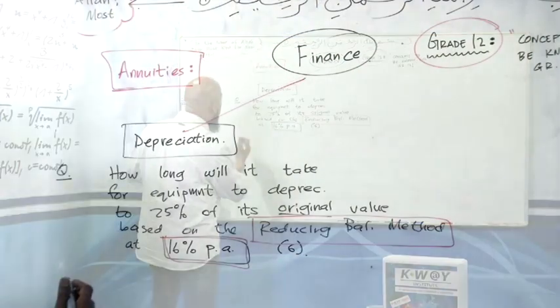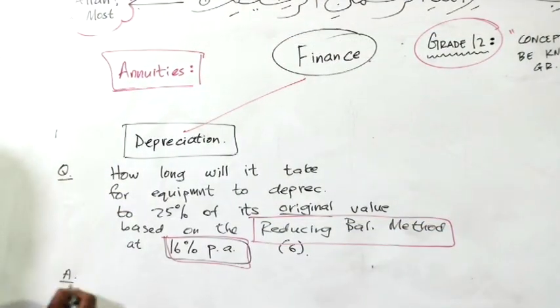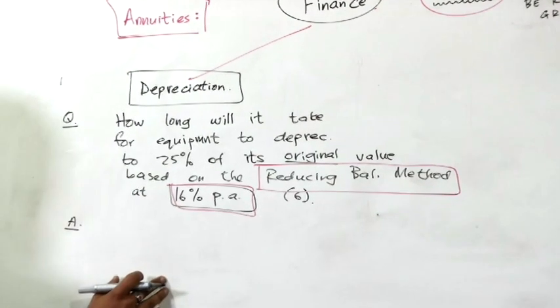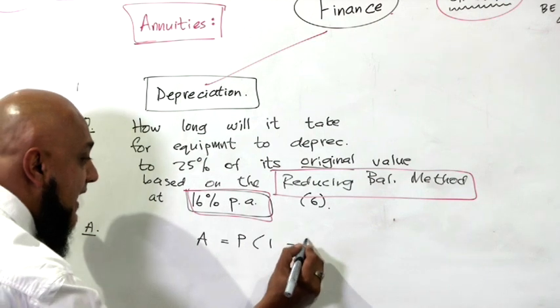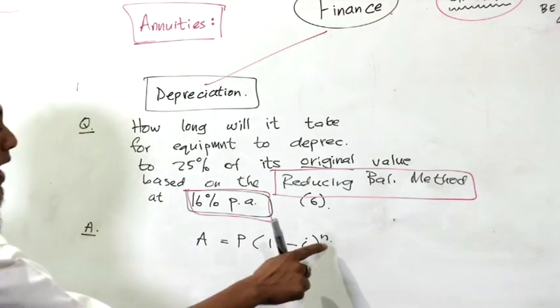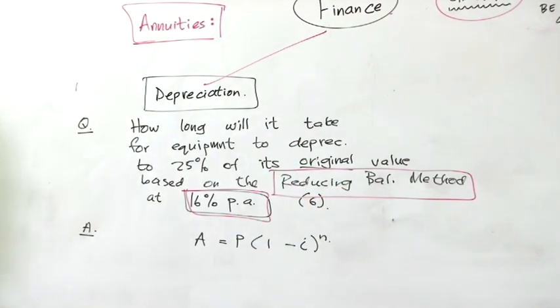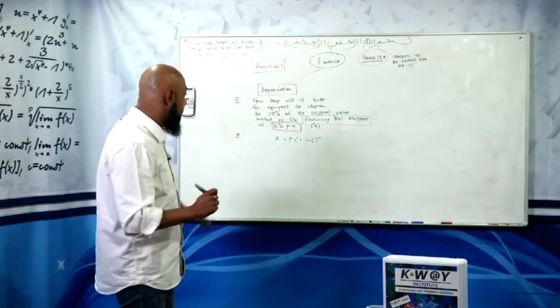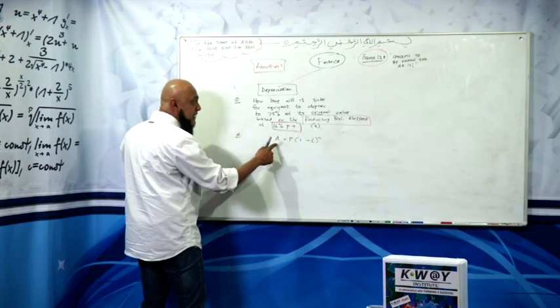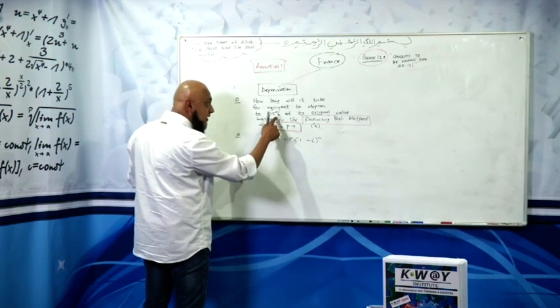Let's get started with our answer. Our answer says, how long? So now we know A equals P into 1 minus i to the power n. Why to the power n? Because we are using the reducing balance method or the diminishing balance method. Now, A being our book value, but we don't have it.